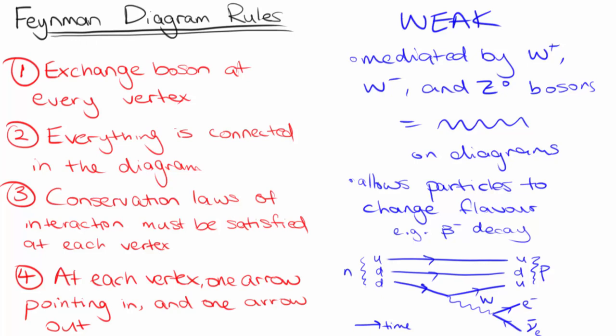There is one thing missing in this diagram, and that is whether we should label the W boson with a plus or a minus. We know that charge must be conserved at each vertex in the weak interaction. So we can look at this first vertex here, where the down quark becomes an up quark.